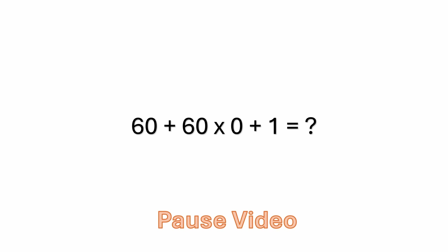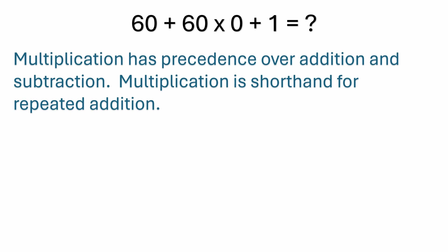This one's pretty easy but I do see a few mistakes made on solving this, so we'll go through it together in a couple of seconds. First of all, just remember that multiplication has precedence over addition and subtraction. One of the mistakes I see often is people will add 60 plus 60 and then multiply by zero and then add one.